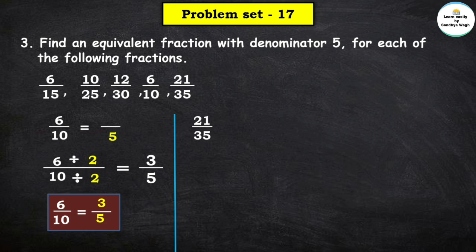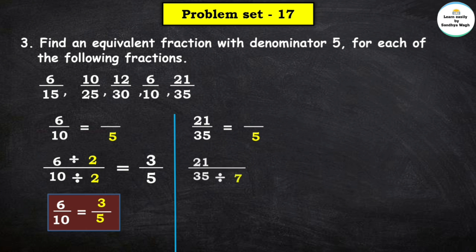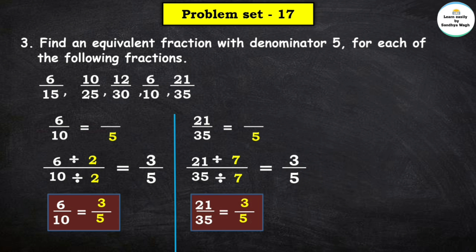Next is 21 upon 35. We have to find the equivalent fraction of 21 upon 35 with denominator 5. 35 divided by which number equals 5? 35 ÷ 7 = 5, as 7 × 5 = 35. So we divide the numerator by 7 as well: 21 ÷ 7 = 3 and 35 ÷ 7 = 5. So 3 upon 5 is the equivalent fraction of 21 upon 35.